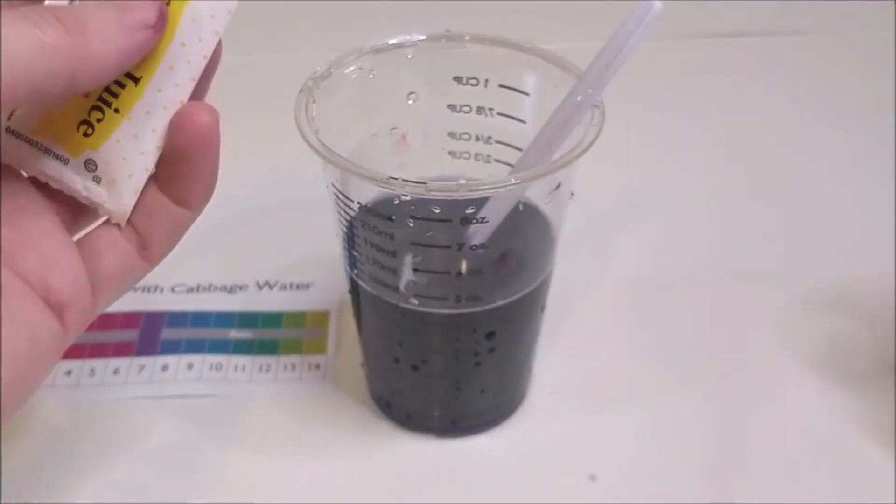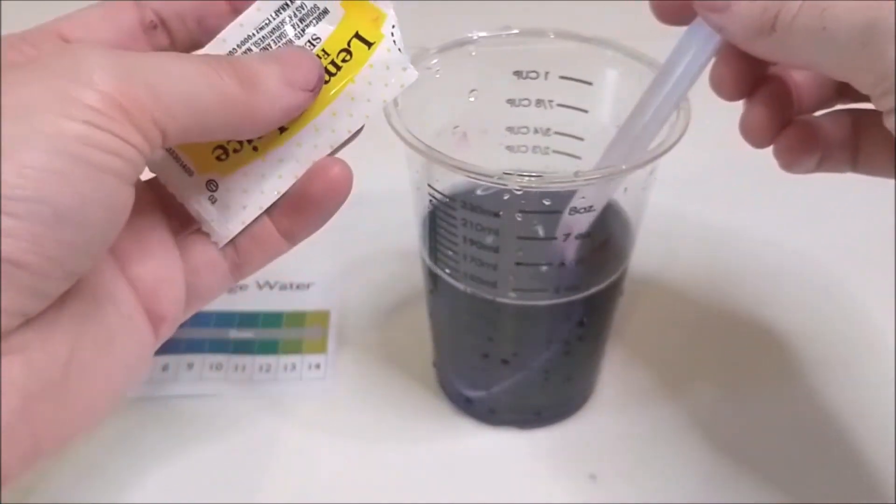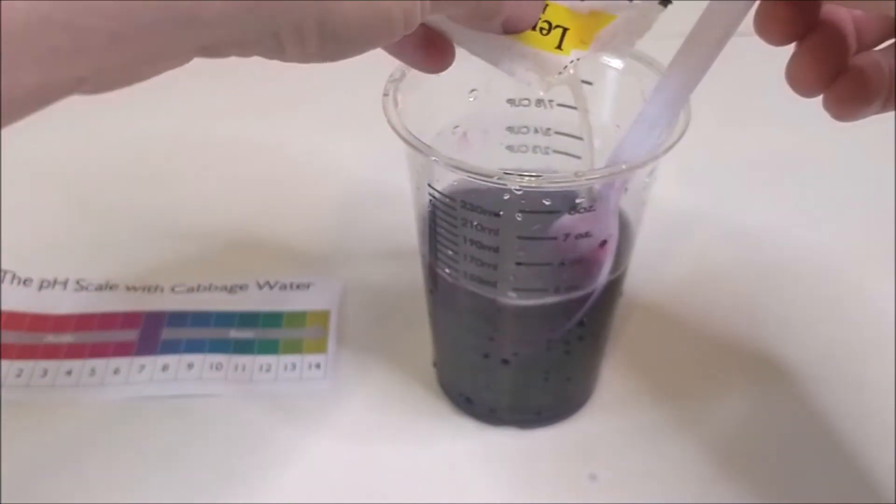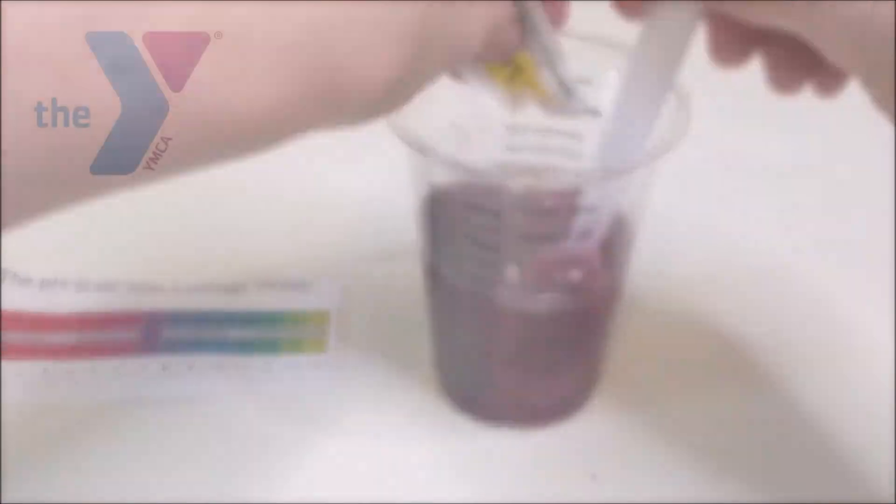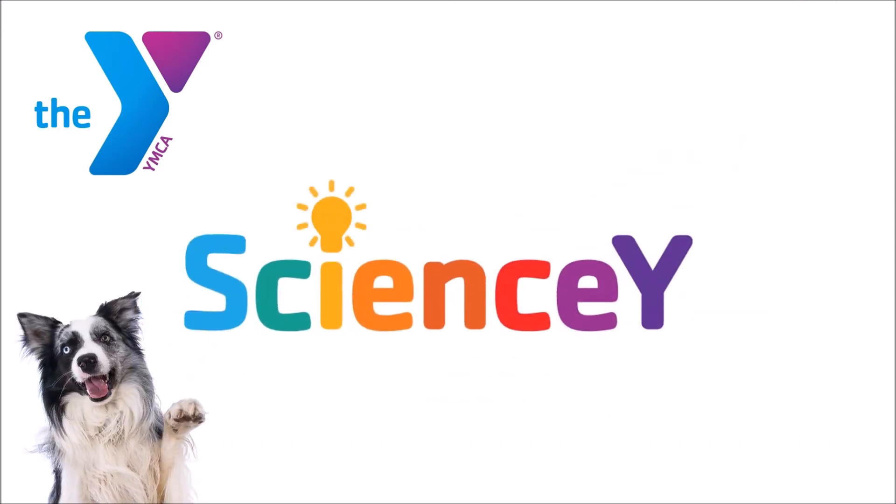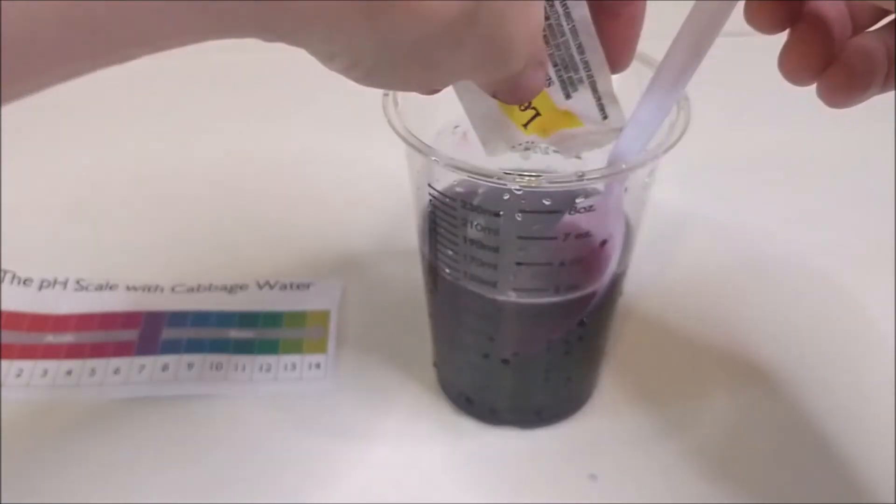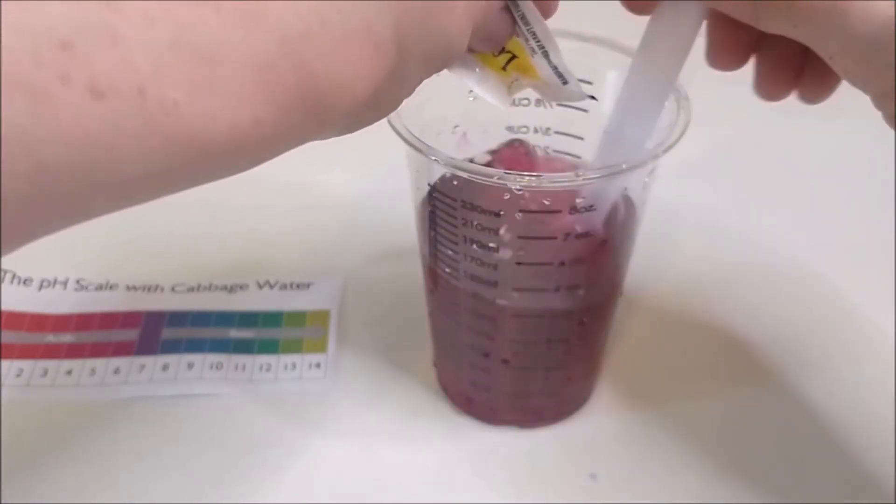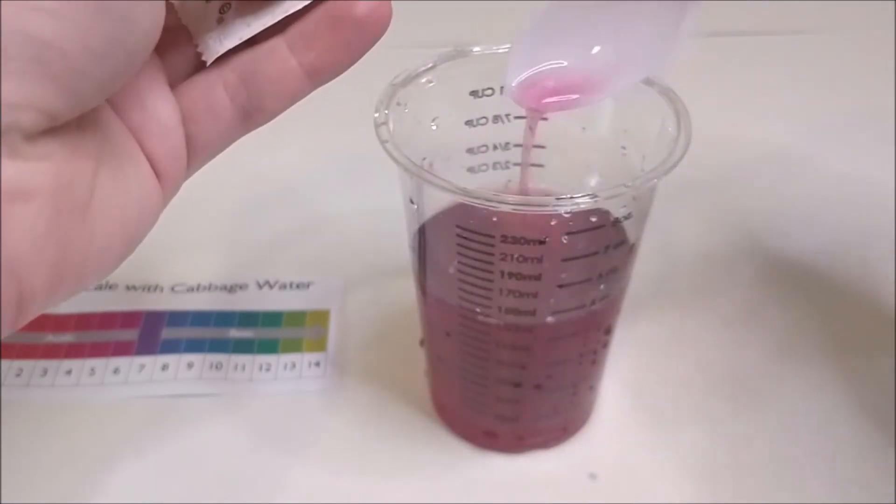Next, grab your lemon juice and pour it in, and watch what happens to the color. Did your water change colors? Probably it got a bit pinker. Check your pH now.